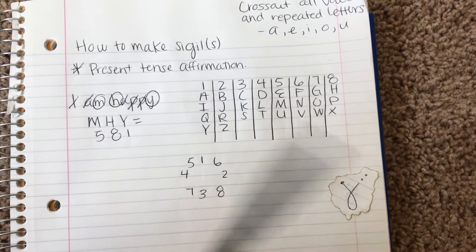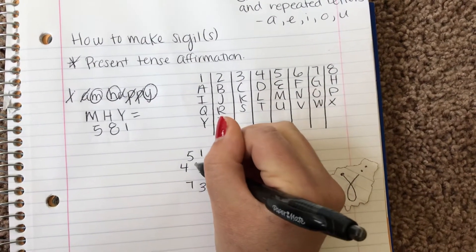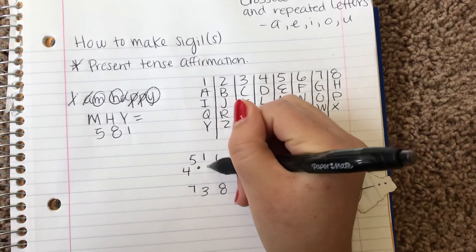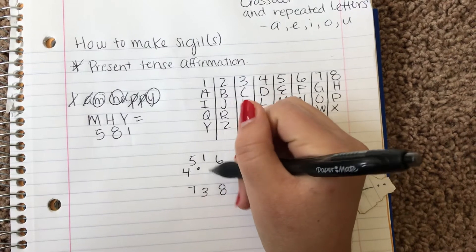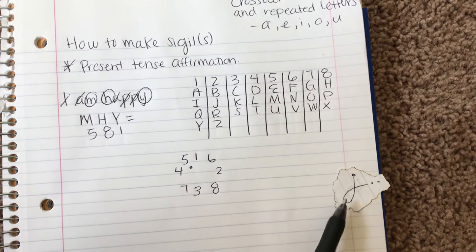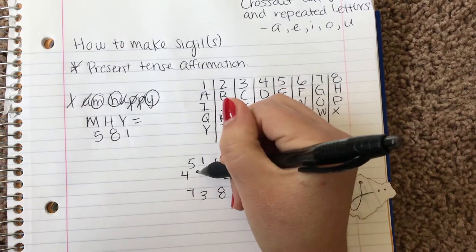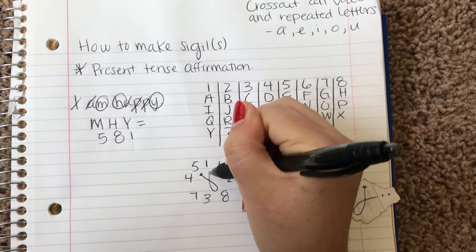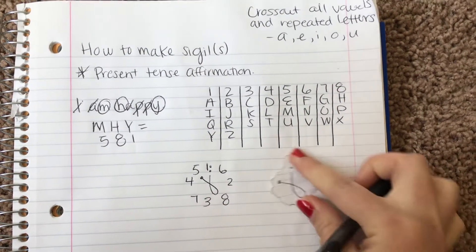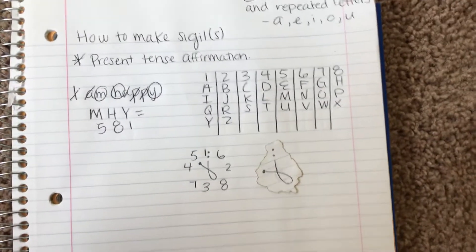Now, we're going to go to the 5. We're going to do a little dot here. We're going to go to the 8. And then you've got to make sure you know which step you're going to take next. So we do the 5, the 8, and then the 1. So this is our sigil here. This is our sigil.